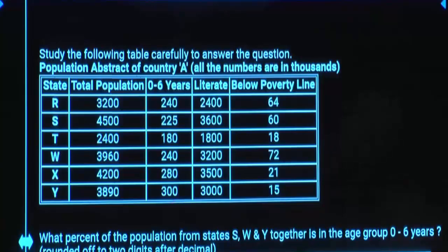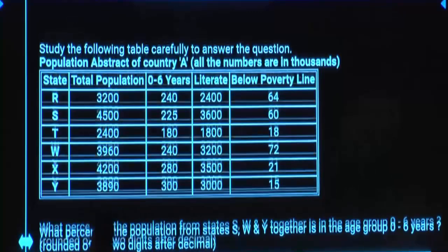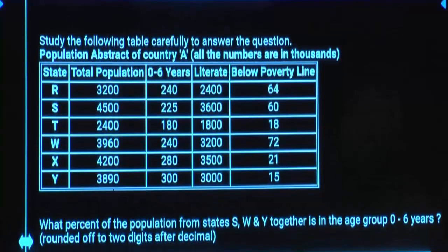So we have 6 states with total population, age group between 0 to 6 years, literates and below poverty line. So total information is there.